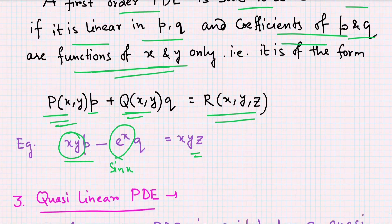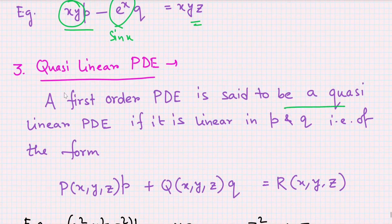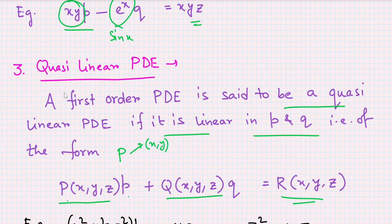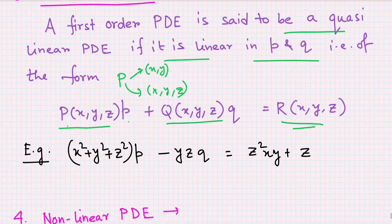A first-order PDE is said to be quasi-linear if it is linear in p and q, and is of the form: P(x,y,z)·p + Q(x,y,z)·q = R(x,y,z). The difference from semi-linear is that here P and Q can be functions of x, y, and z, not just x and y. For example: (x² + y² + z²)·p − yz·q = z²xy + z.